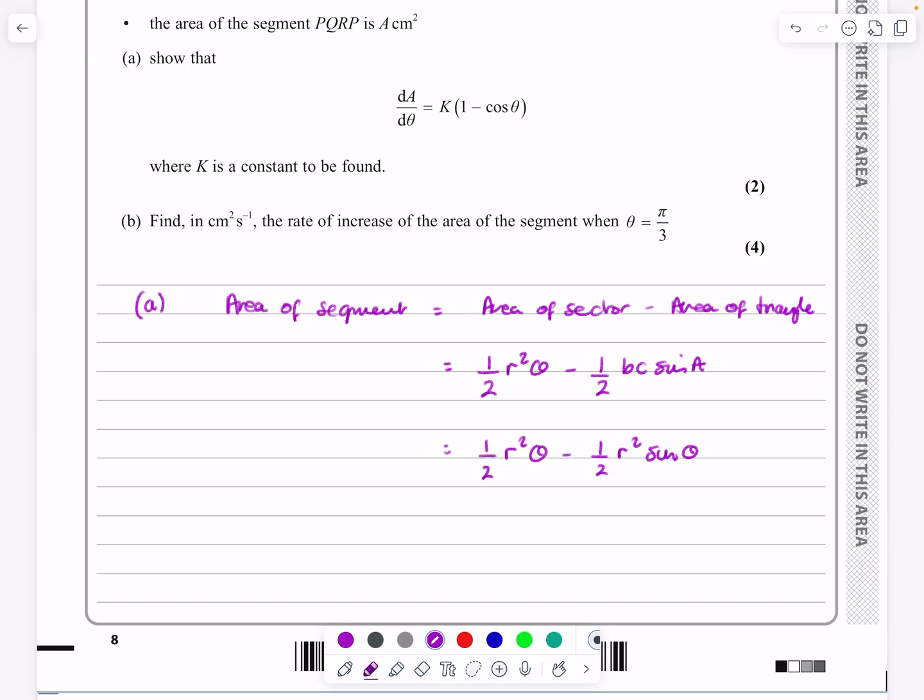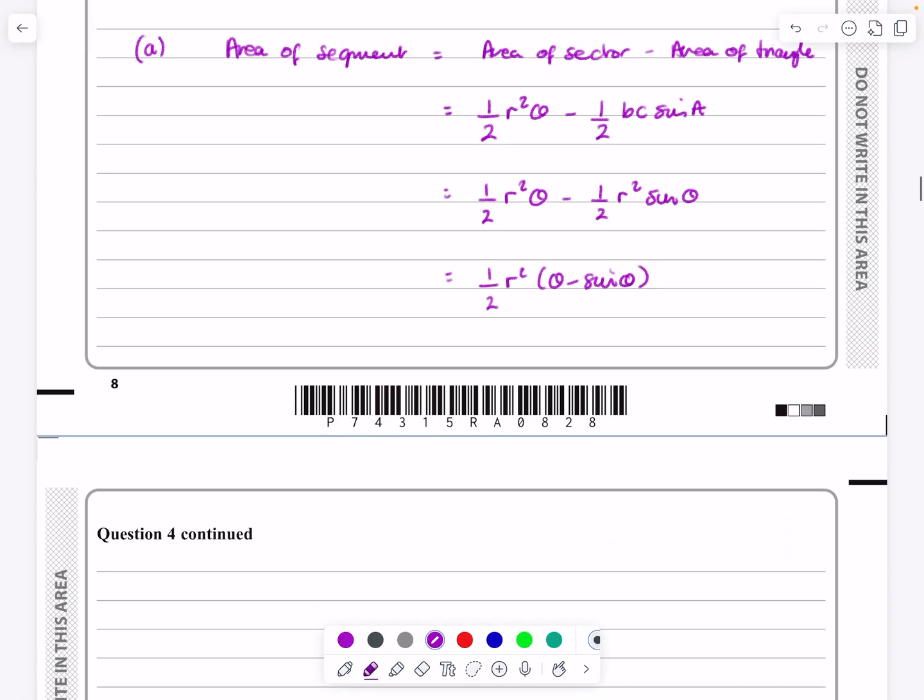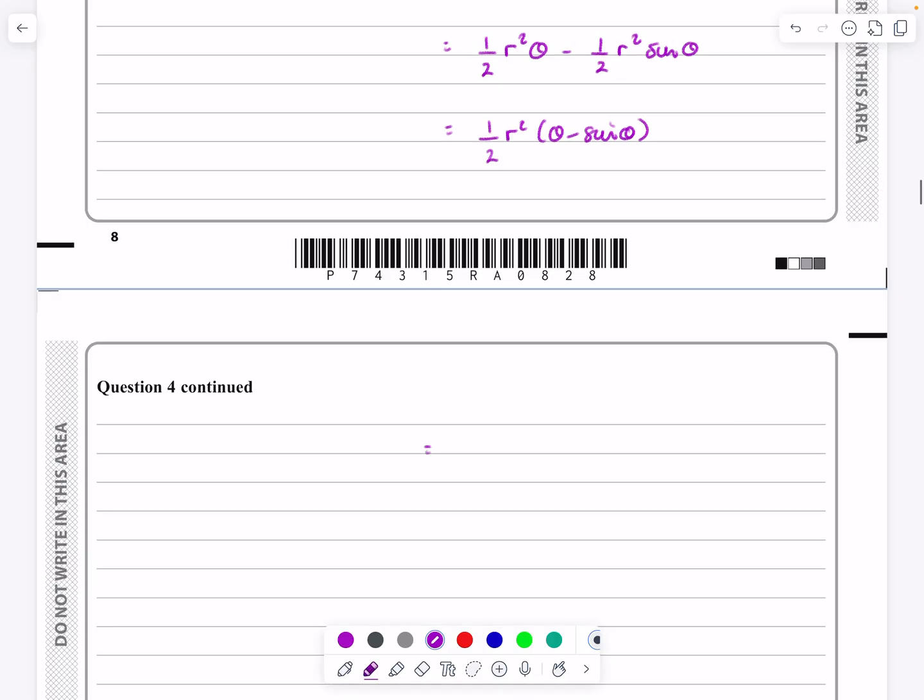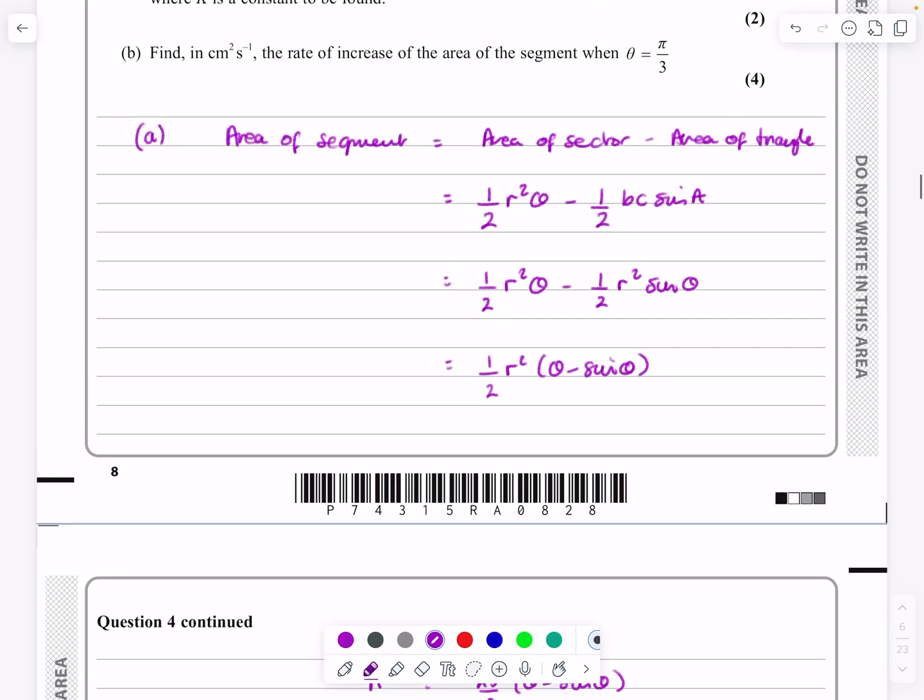And we know that R is equal to 5 here. So what people sometimes do is say half R squared times theta minus sine theta, and then in this particular case, that's 25 over 2 times theta minus sine theta. So that's my A,